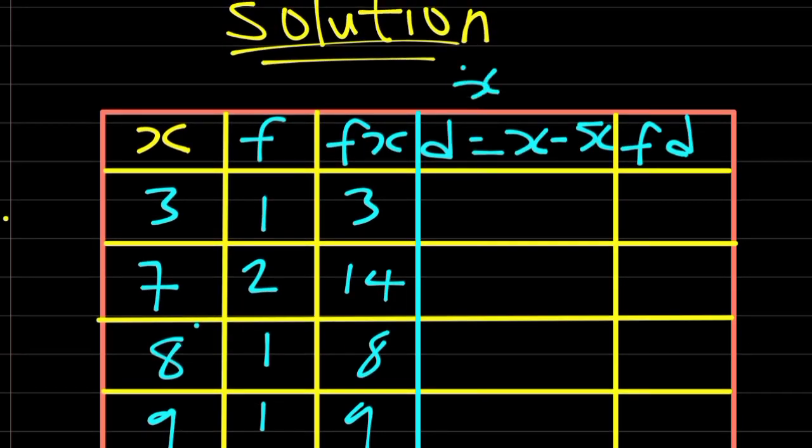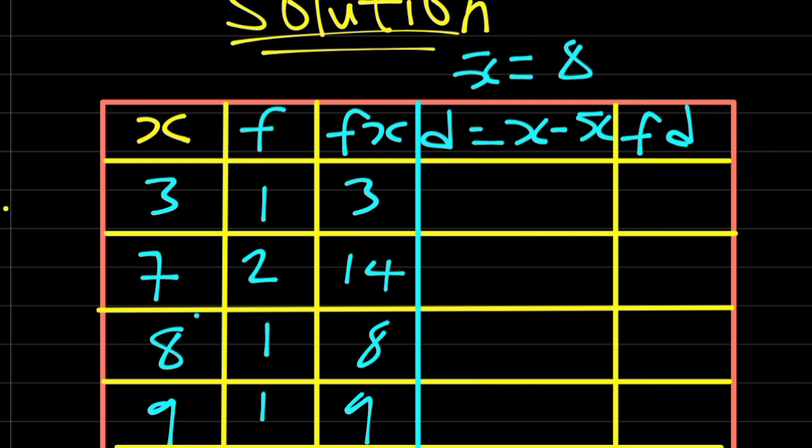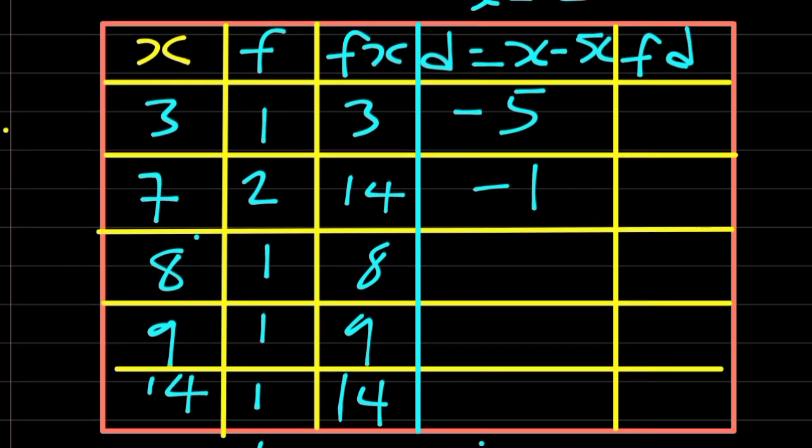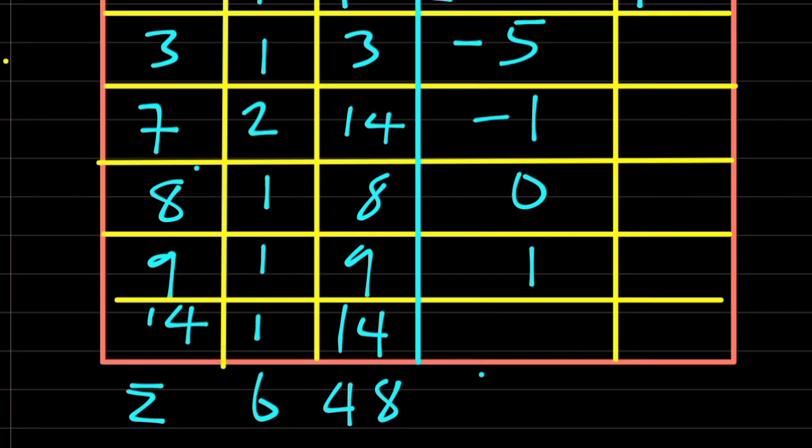Since our mean is equal to 8, we can now calculate our deviation, which is x minus mean. 3 minus 8 is actually minus 5. 7 minus 8, minus 1. 8 minus 8 is 0. 9 minus 8 is 1. And 14 minus 8, that is 6.